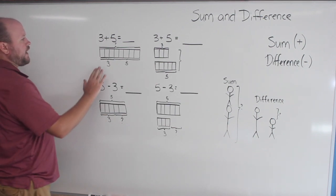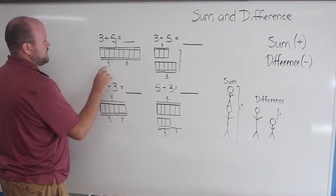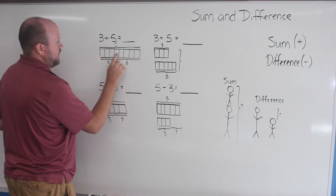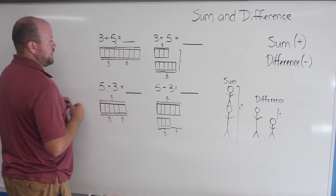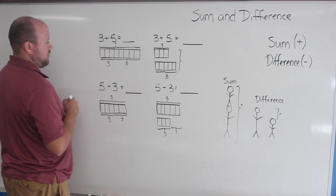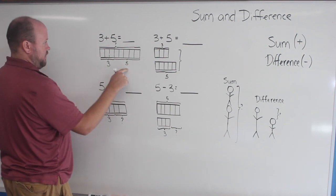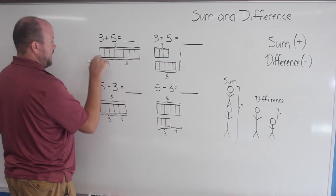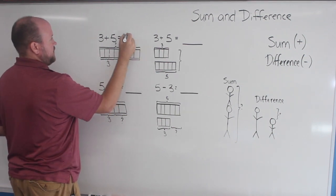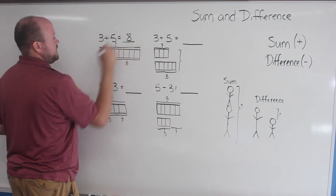So if we look at this problem right here, three plus five, we can see here that I have one bar model, and it goes all the way across, and I have three marked off here, five marked off here. So three plus five, if I don't have that math fact memorized, I can go one, two, three, four, five, six, seven, eight. And so three plus five is eight.